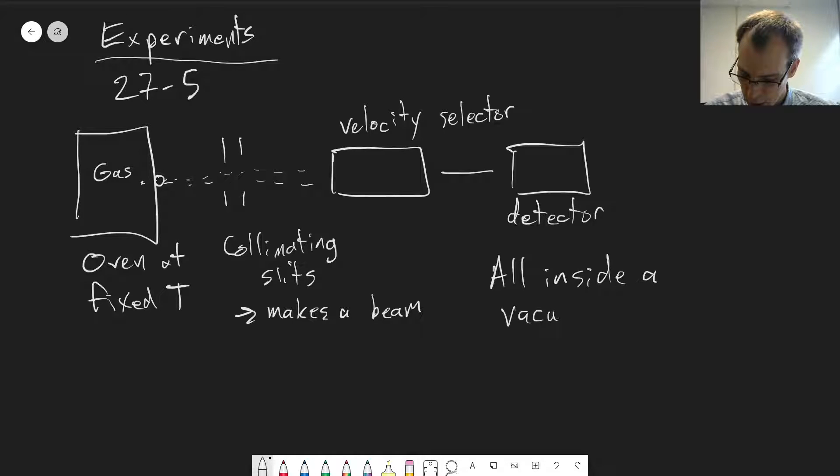Just so that you don't have other gas particles coming in and interfering with your beam that you've made. And so what this velocity selector looks like, you can look at figure 27.9. I don't want to copy it here because I want to show a video in just a second that shows a slightly different version of it, but that's a little bit clearer to see.